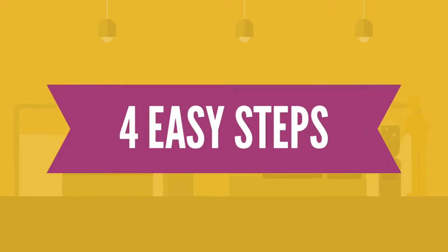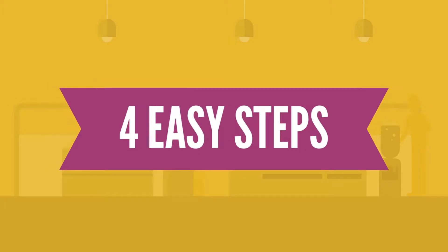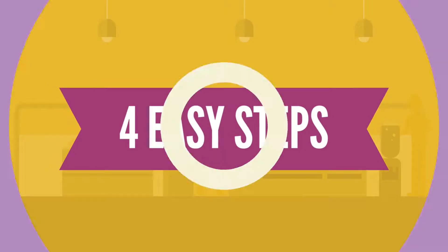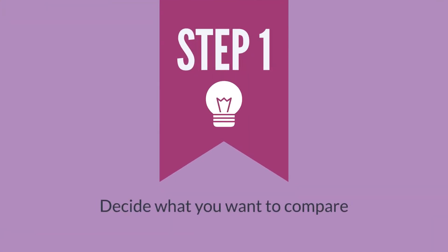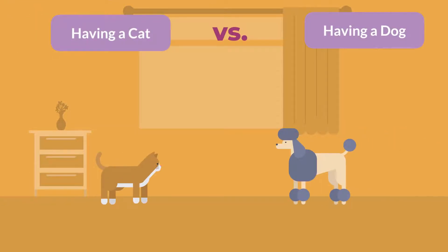Here's how to create one in four easy steps. Step 1: Decide what you want to compare. Place a descriptive title at the top of the page — for example, having a cat versus having a dog.